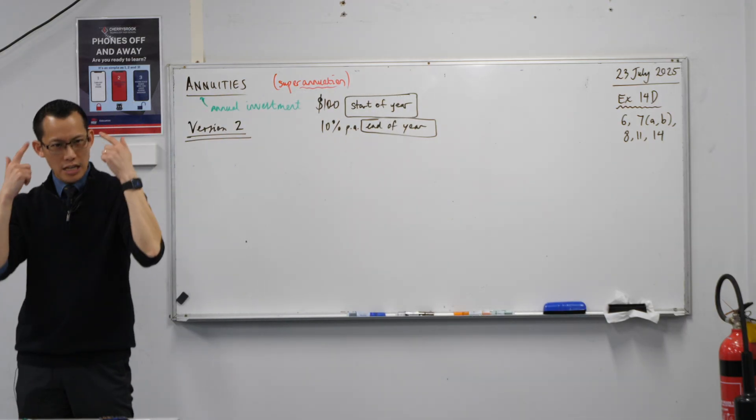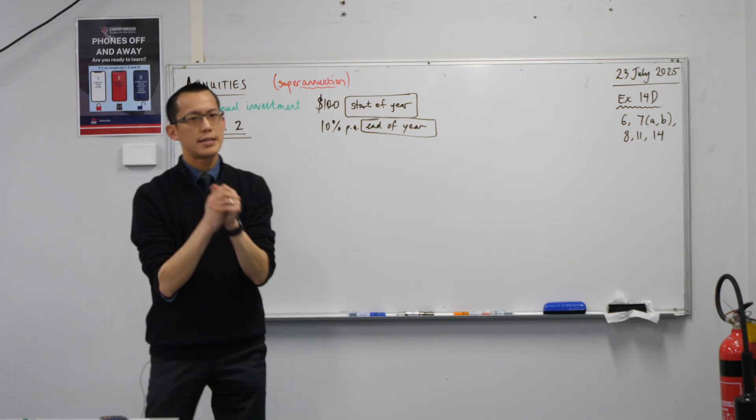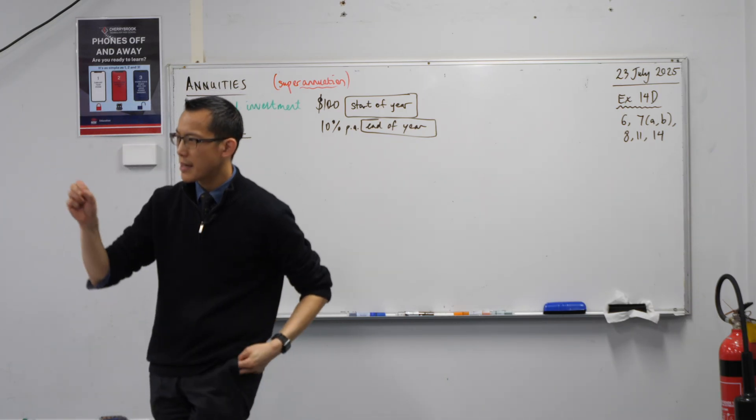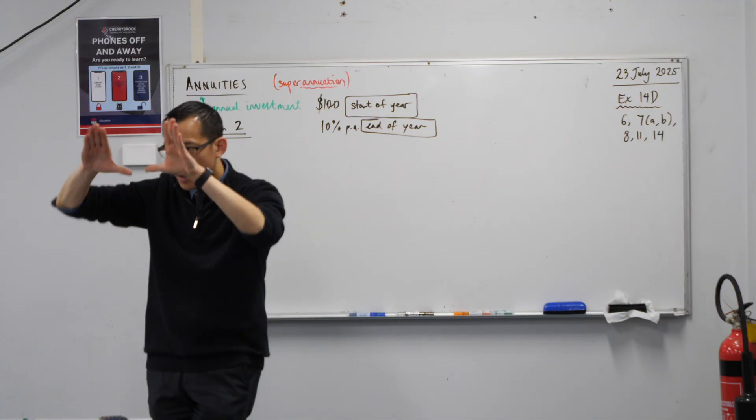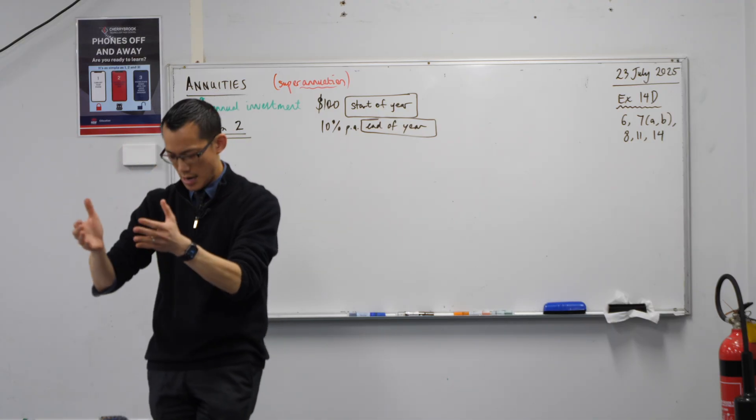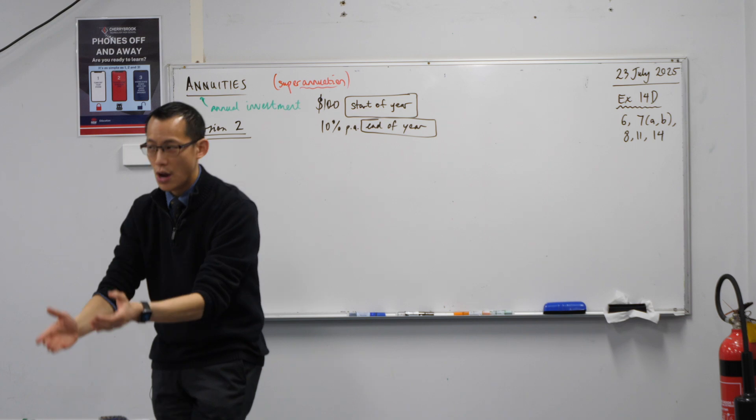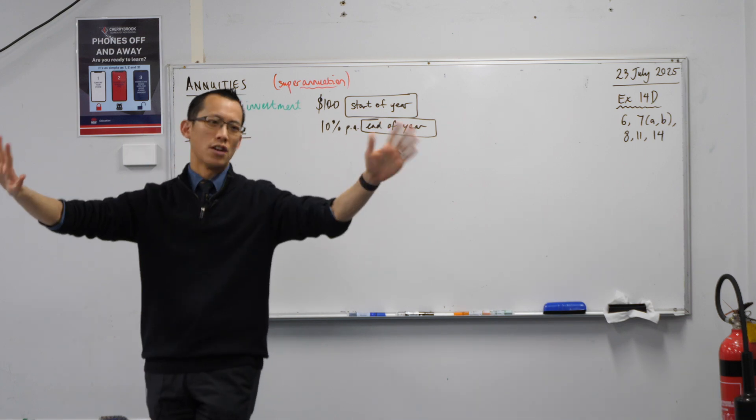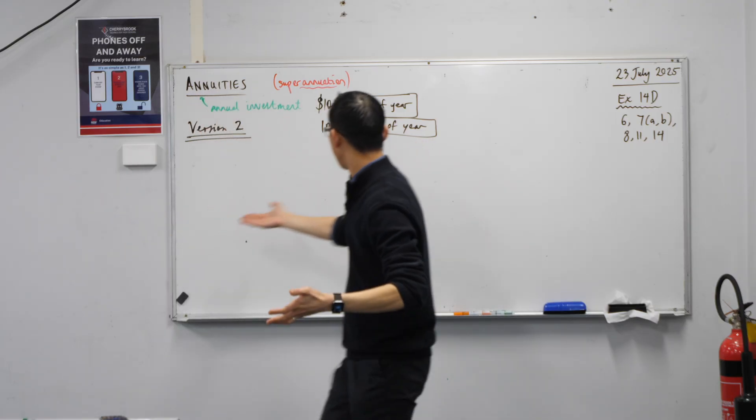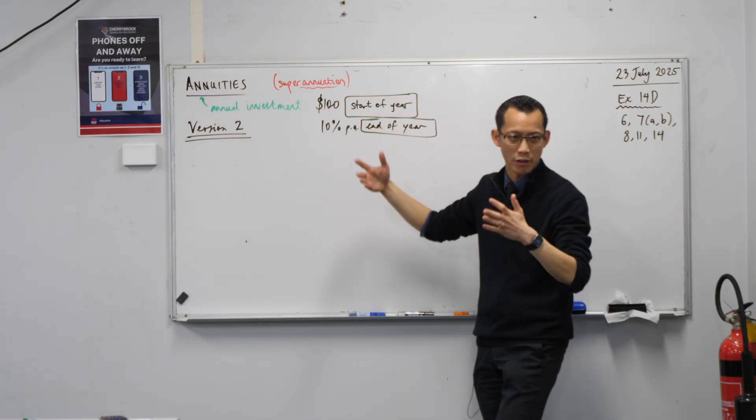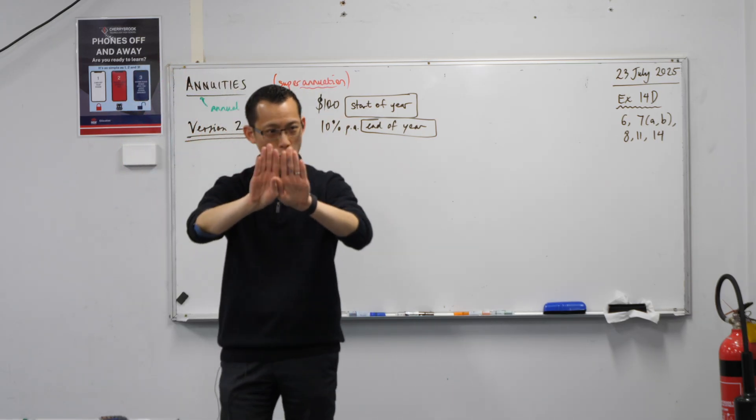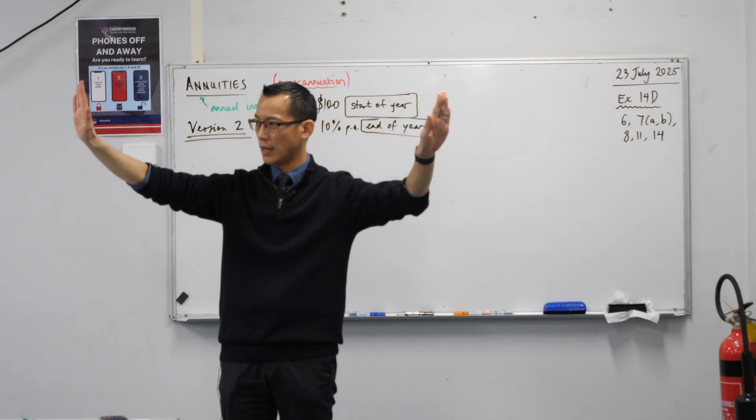Don't answer this out loud, I just want you to think about it in your brain. Does it make a difference if I've got $100, does it make a difference whether I put all $100 as a lump sum in one bank account or putting $50 here and $50 here, assuming all other things are equal like the interest rate and the compounding and all that kind of thing?